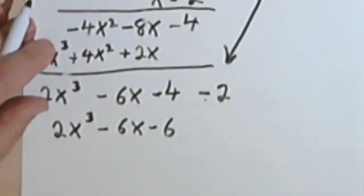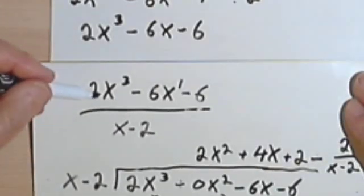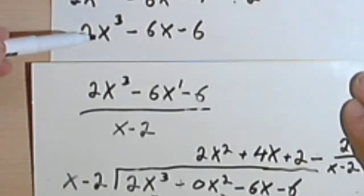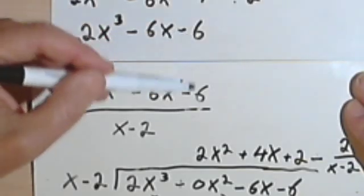And now I want to go back to my original problem and make sure that's the same as the original numerator. So I've got 2x to the third minus 6x minus 6.